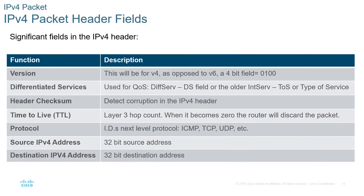The version field indicates which version of IP you're running — version 4 or version 6. Differential services provide prioritization, or QoS. The checksum ensures the header is not corrupted. TTL, or time to live, is decremented by 1 between each hop, ensuring packets don't live forever — they can only traverse so many layer 3 networks before being discarded. The protocol field identifies the higher layer protocol, such as TCP or UDP. Source and destination addresses hold the appropriate IPv4 addresses.